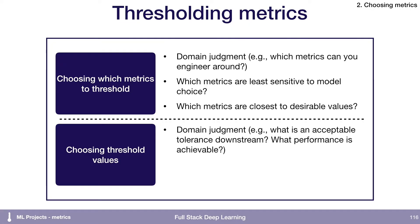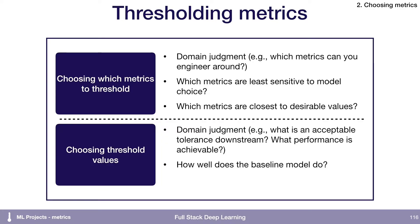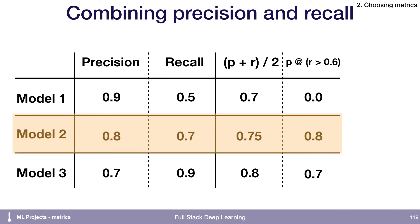Choosing the value at which to threshold involves domain judgment about what tolerance you need to solve the downstream problem. You can look at how well the baseline model performs, and how important the metric is right now. If the baseline is already doing really well, set the threshold better than the baseline. If a metric is really important, choose a stricter threshold for it. An example: we might say we'll pick the model that has the best precision at a recall of better than 0.6 — and if we do that, model two will jump out as the best.